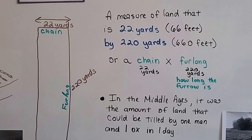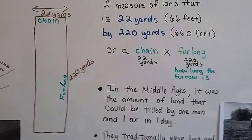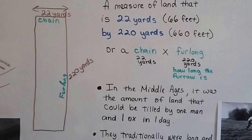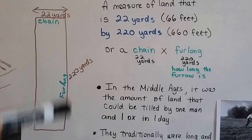It's also considered a chain times a furlong. So in the Middle Ages, it was the amount of land that could be tilled by one man and one ox in one day. So a chain is 22 yards across and a furlong is 220 yards.